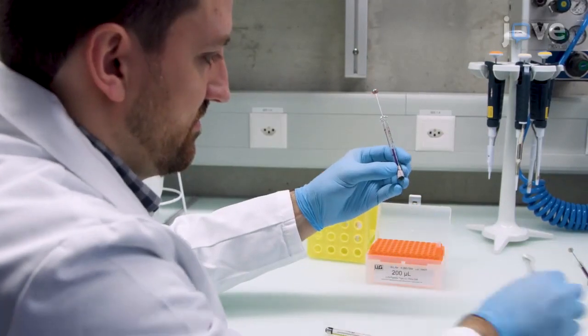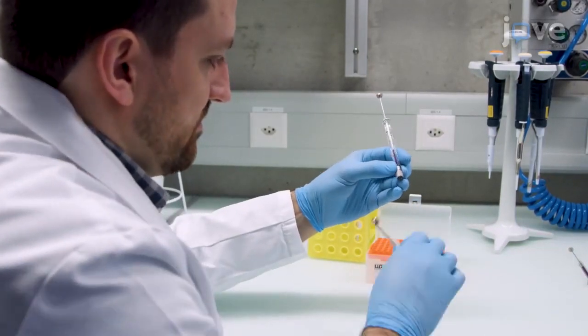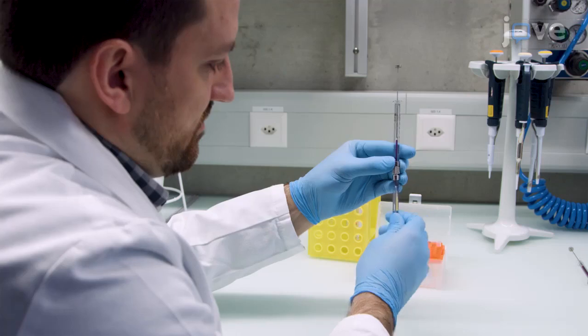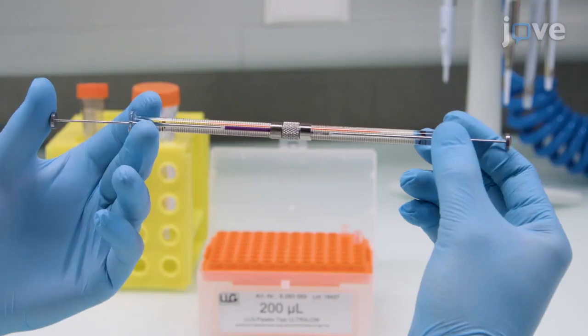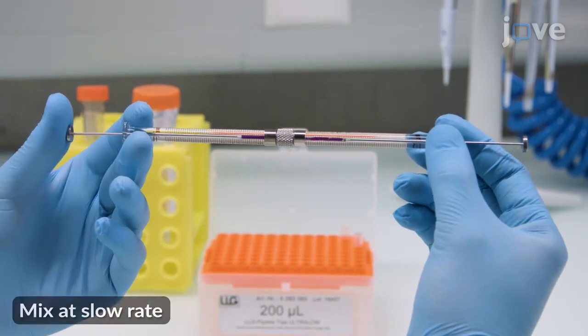Remove the empty syringe from the coupler and attach the pre-mixed LCP to the crystal containing syringe using a standard syringe coupler. Then, pass the sample through the coupler 100 times.